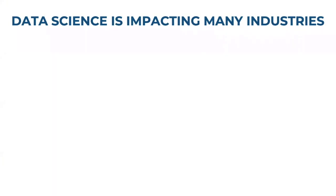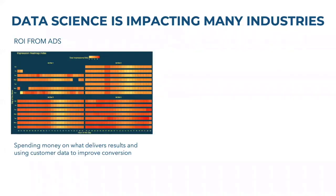Data science is already impacting many industries. For example, data visualization can be an important technique utilized by decision makers for marketing, revenue generation, or financial market trends. To make a decision about return on investment from advertising, one can look at the number of impressions from ads and pick the ads consistently delivering information to the target audience. What you see is a heat map — the darker the square, the more impressions — and you can compare ROI across the whole week. As a decision maker, I'm going to pick, just based on the visual representation of data, the most effective ad set.